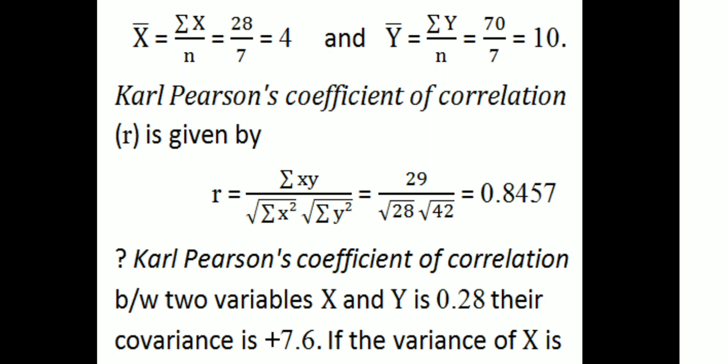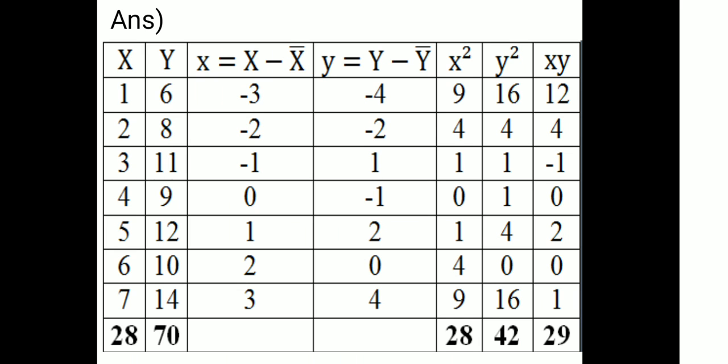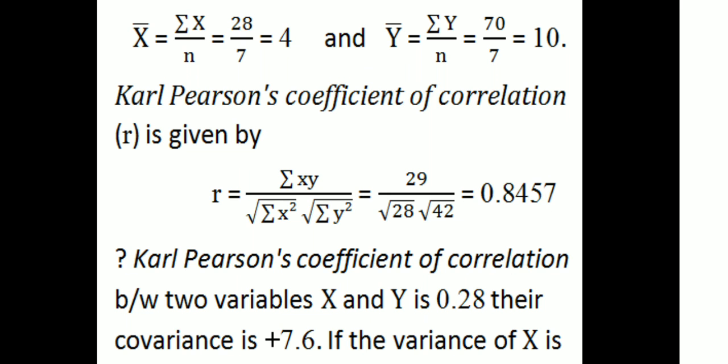Here, small x is capital X minus x-bar, and small y is capital Y minus y-bar. x-bar is the mean of x, which is summation X by n. y-bar is the mean of y, which is summation Y by n.